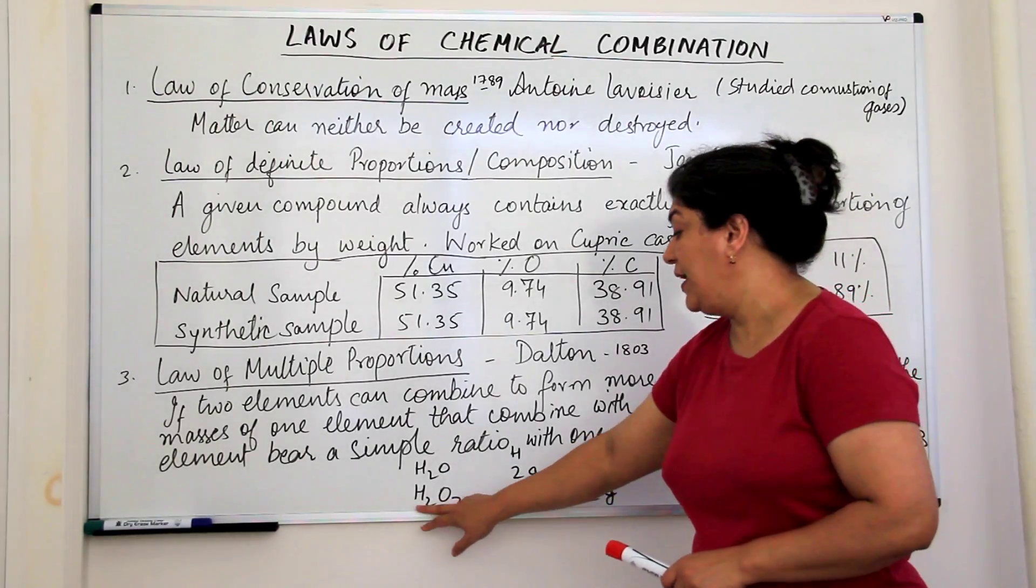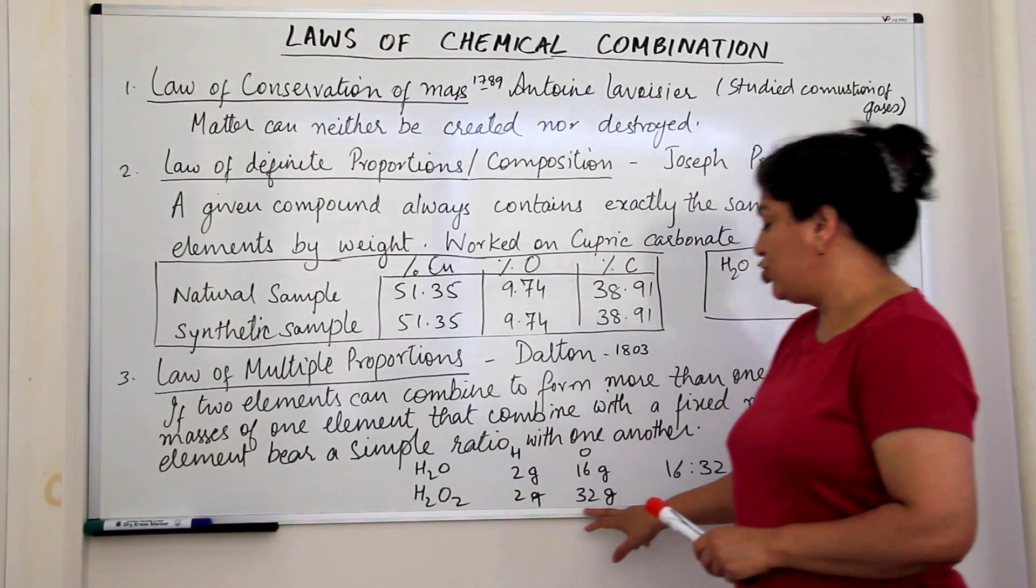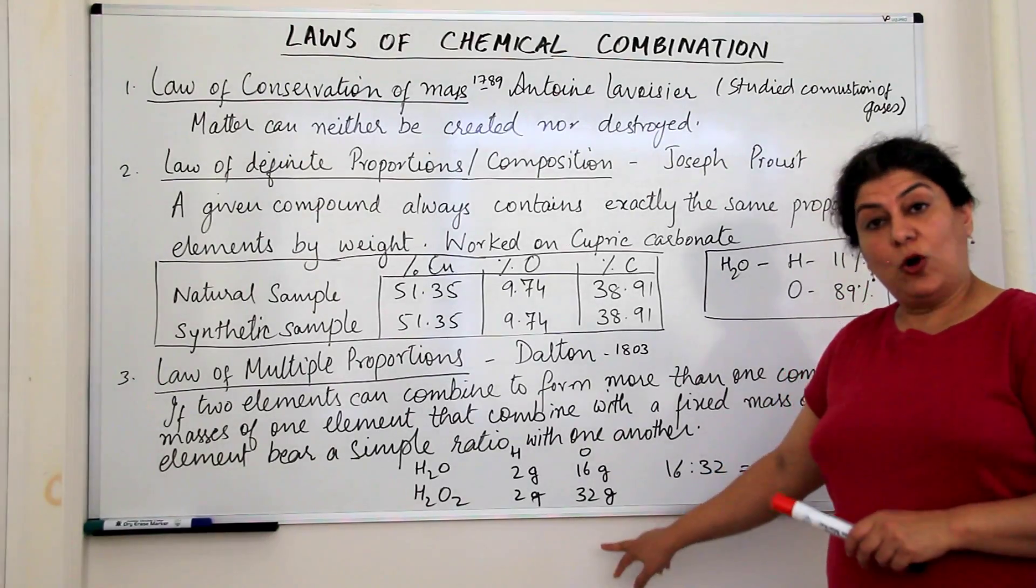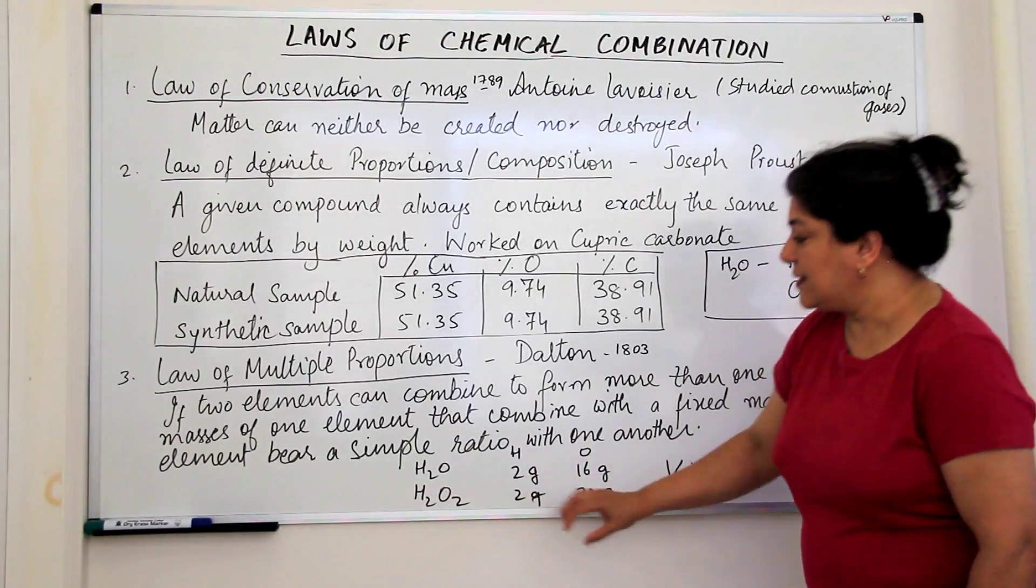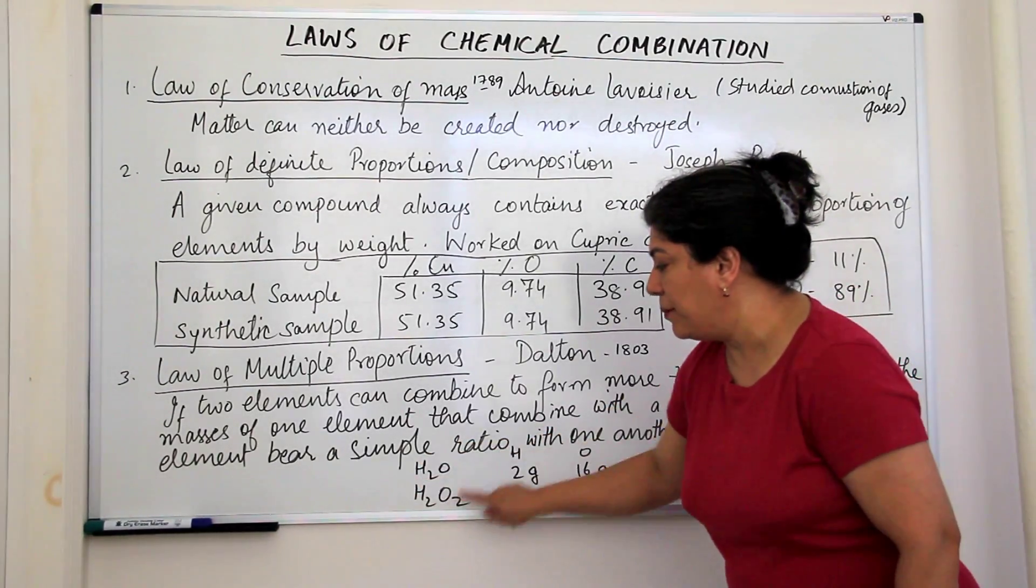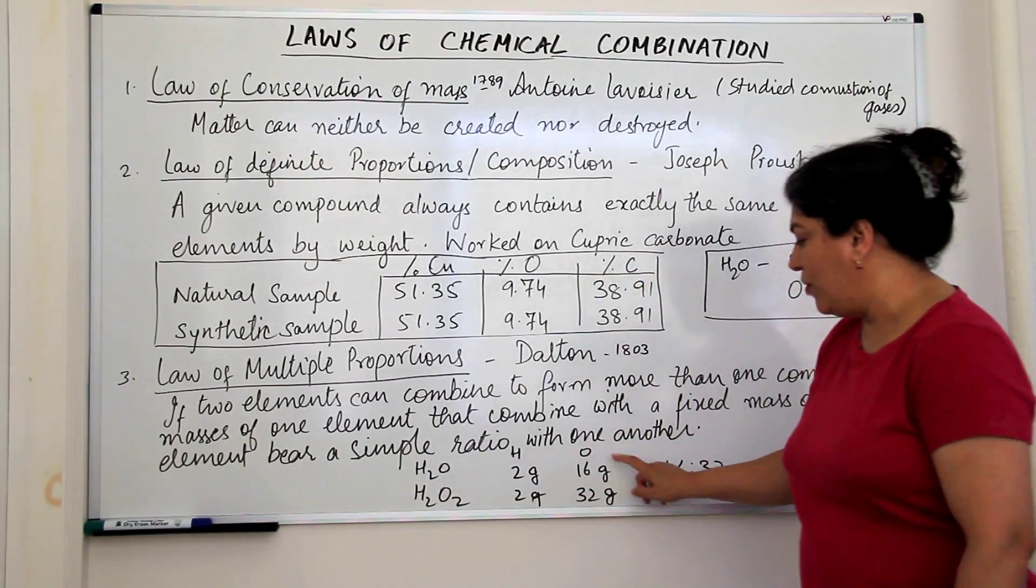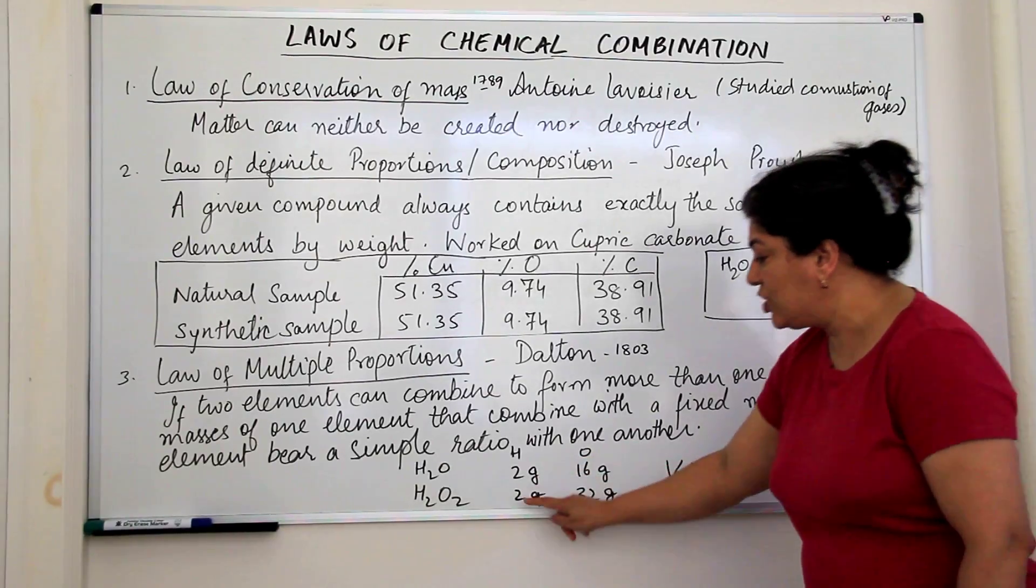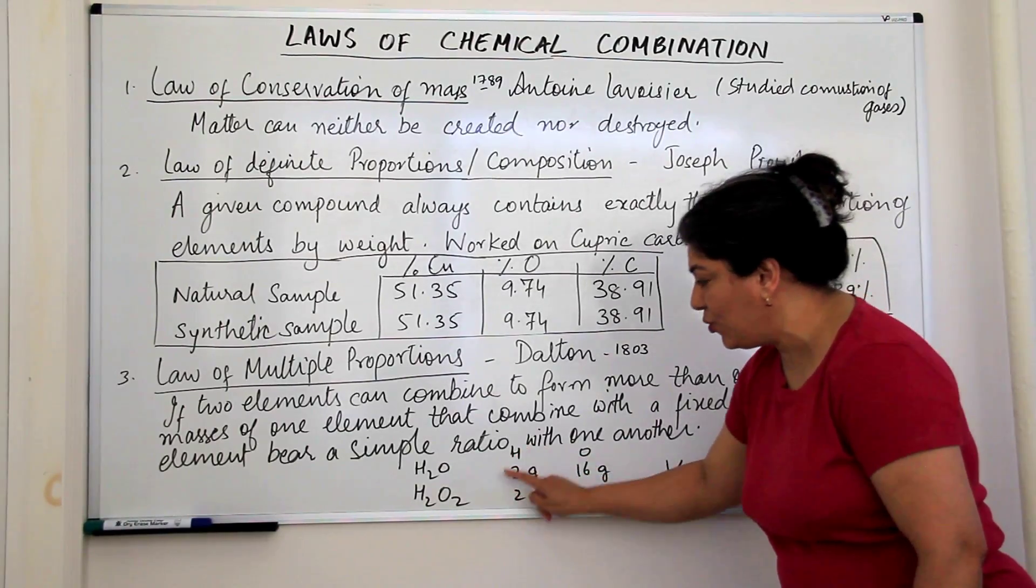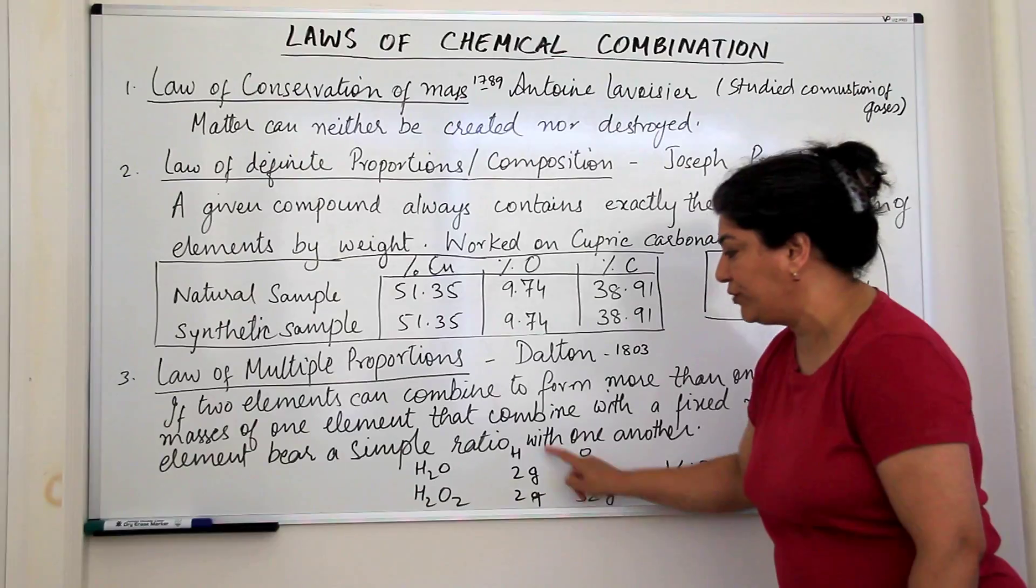In hydrogen peroxide, if we have two grams of hydrogen, then there should be 32 grams of oxygen. Now, this is if two elements combine to form more than one compound, then the ratio of one of these elements which combines with a fixed mass of the other, hydrogen is fixed, it is two, but it is oxygen which has different masses.